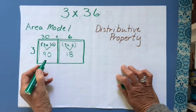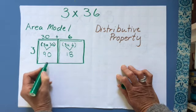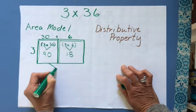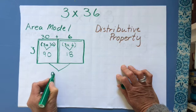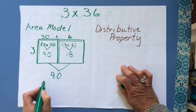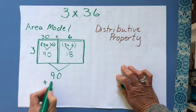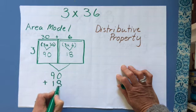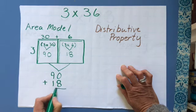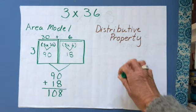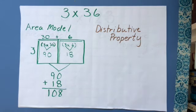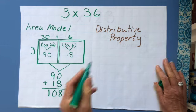Now all I do is find the area of the whole box, so I add the two together: 90 plus 18, and I get 108.